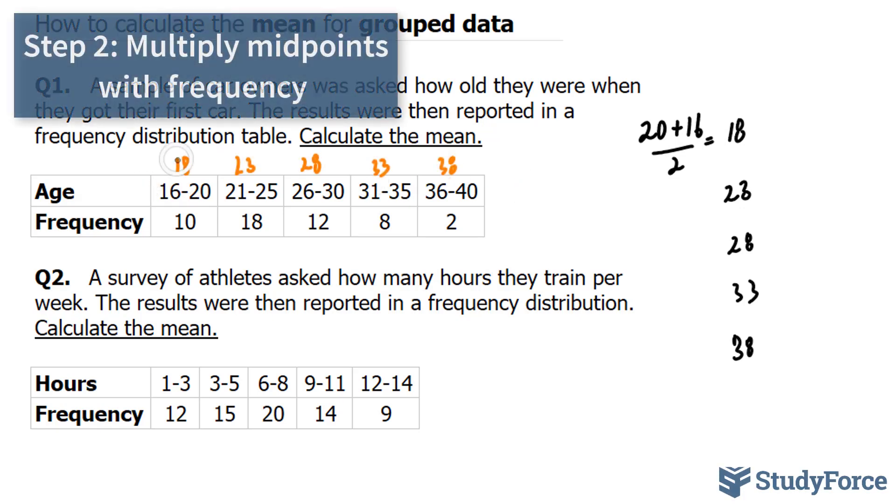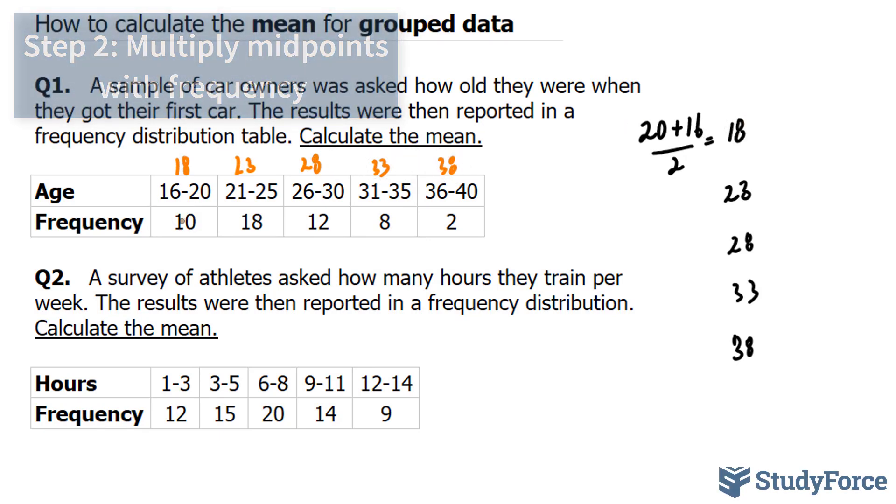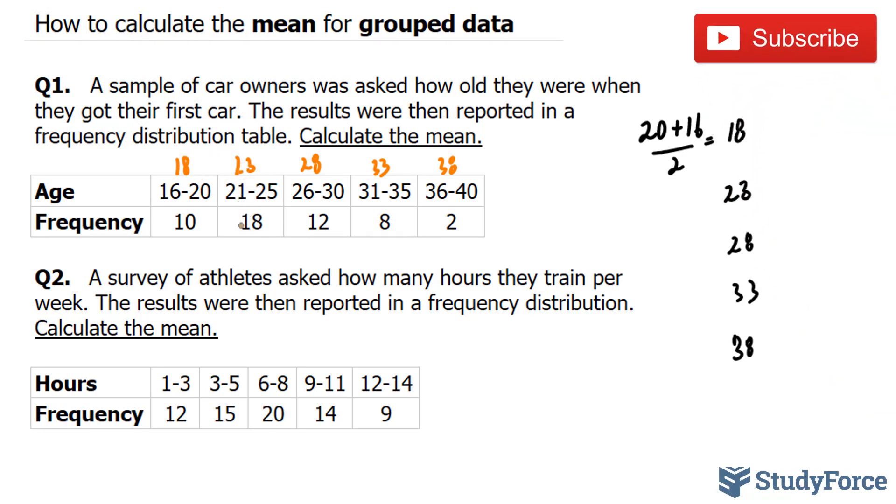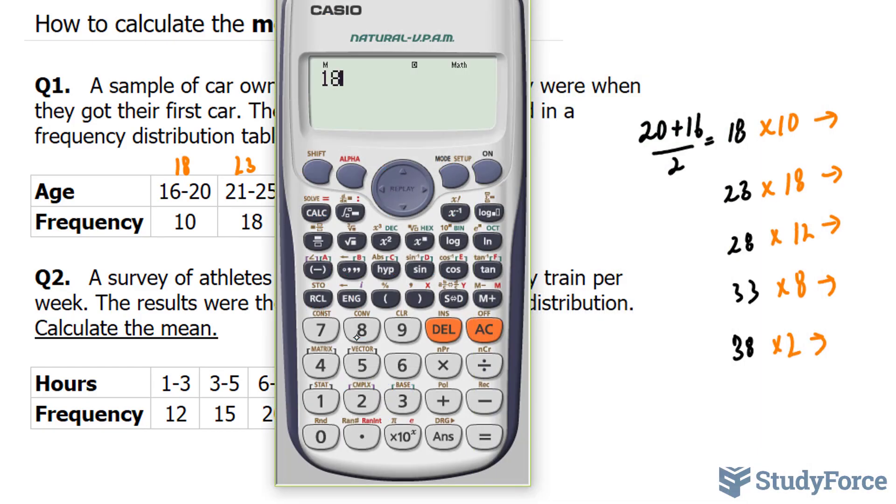The next step is to multiply these midpoints by the frequencies they represent. So we'll take 18 and multiply it by 10, 23 by 18, 33 by 8, and so on. And if you do this using your calculator, you should end up with the following numbers: 18 times 10 plus 23 times 18 plus 28 times 12 plus 33 times 8 plus 38 times 2.